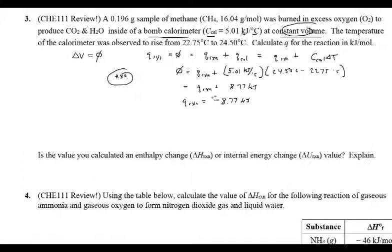The temperature went up, so heat was transferred from the reaction to the water in the calorimeter — that tells us already there's an exothermic reaction, so the sign is negative. Working through the calculation, I get something like 8.77 kilojoules for the calorimeter term, which means Q of the reaction is mathematically negative 8.77 kilojoules. That negative sign is really important — it matches reality.